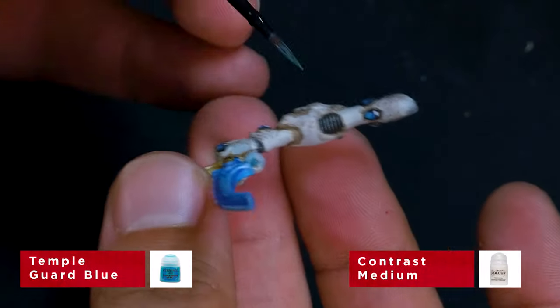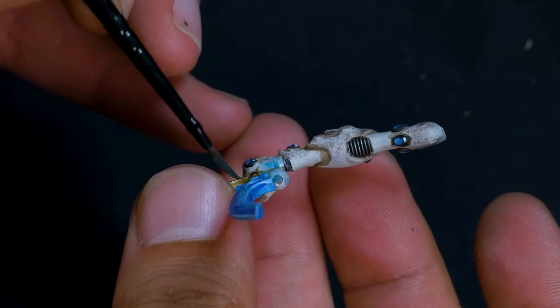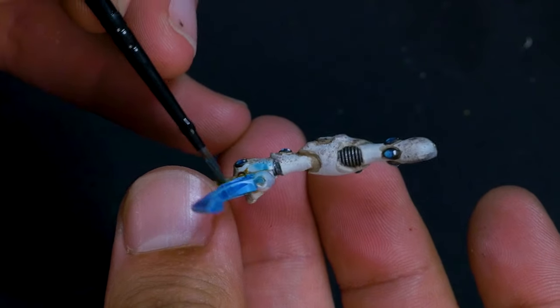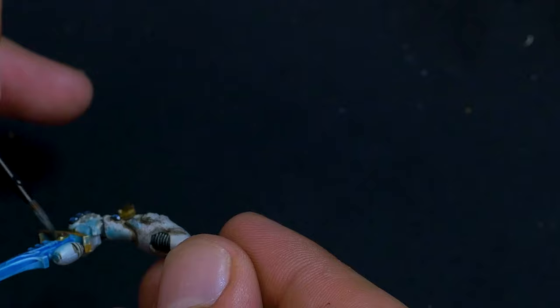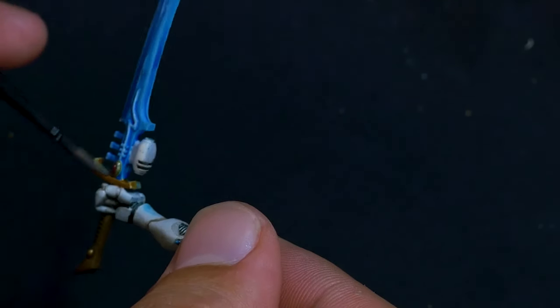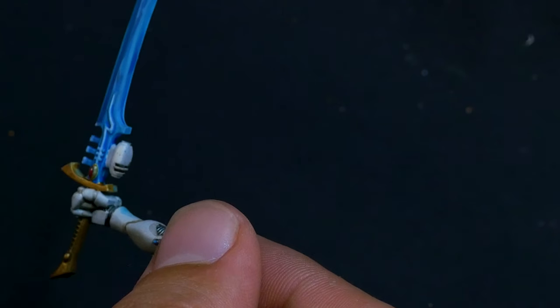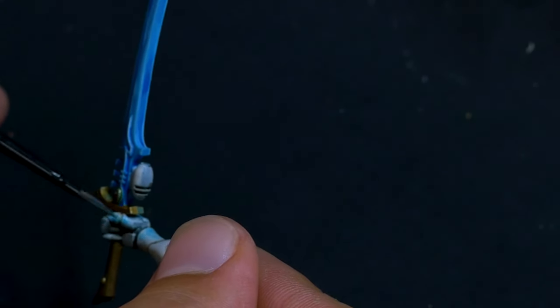To give the sword a bit of a glow, I decided to use a bit of contrast medium and a bit of Temple Guard Blue. The mix I make is about 70% contrast medium. I'm just going to put this wherever I think the light emanating from the sword is going to land, so the back of this little bubble bit and then along the top of the hand and the wrist. Don't forget the thumb as well.